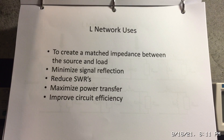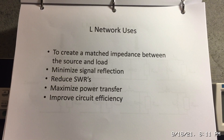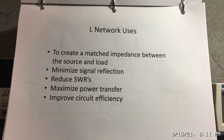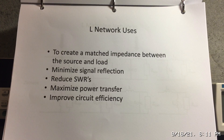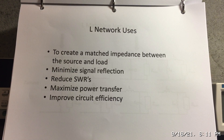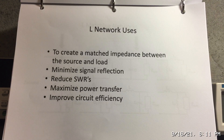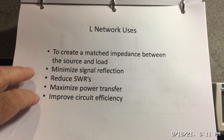So what are the various uses for L networks? We already said to match impedance, but what does that do for an RF system? Well, it minimizes the signal reflection — the amount of signal being reflected back into the amplifier — it reduces the standing wave ratio or voltage standing wave ratio, and as we said, maximizes the power transfer, which ultimately improves the circuit efficiency. So these are the main uses of an L network: to try to match one impedance to another or one load to another load.